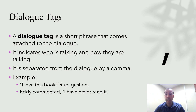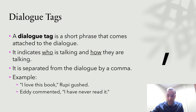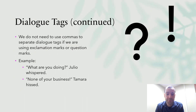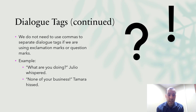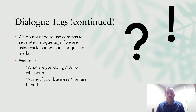Eddie commented, 'I have never read it.' Here the dialogue tag comes first, so we have the dialogue tag, then a comma, then we open our quotation marks, then the full sentence starting with a capital letter and ending with a period, followed by a closing quotation mark. We do not need to use those commas to separate dialogue tags if we are using exclamation marks or question marks. We always use a comma if the tag comes before the speech, but if it comes after and we've got a question mark or exclamation mark, we don't need to add a comma as well.